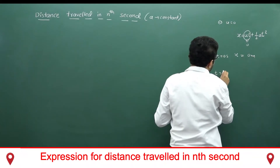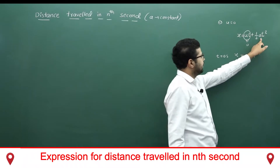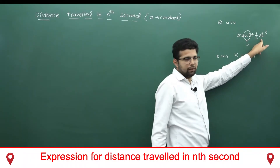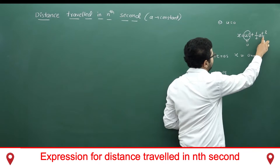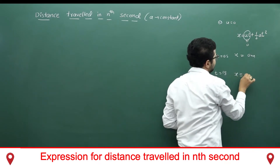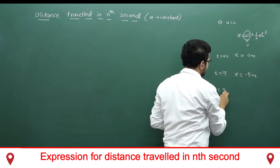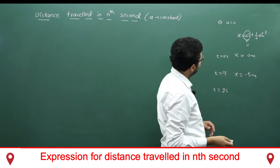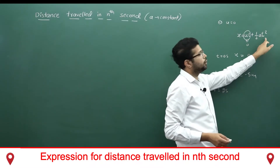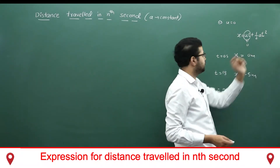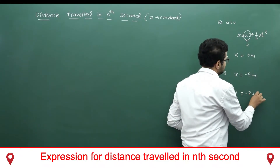When t = 1 second: a = -10, so ½a = -5, and x = -5 × 1² = -5 meters. When t = 2 seconds: x = -5 × 2² = -5 × 4 = -20 meters.